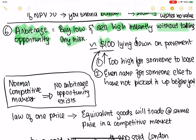It's like saying you found $100 lying on the pavement. First, $100 is too high for someone to lose carelessly. And even if they did, it's rare that no one else noticed before you. Similarly, if you notice a trend where a stock is going up, most likely many people have already noticed it and jumped in. So remember, there is no arbitrage opportunity in a normal competitive market.